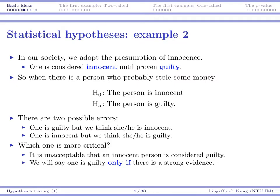Let's consider another example. In our society, when we feel that one guy may be guilty, we actually accept the presumption of innocence. That means we basically consider one guy as innocent until we have strong evidence showing that he or she is guilty. Suppose there is a person who probably stole some money. If we are going to test this situation, we're going to have our null hypothesis and alternative hypothesis. The null hypothesis is that the person is innocent and the alternative hypothesis is that the person is guilty.